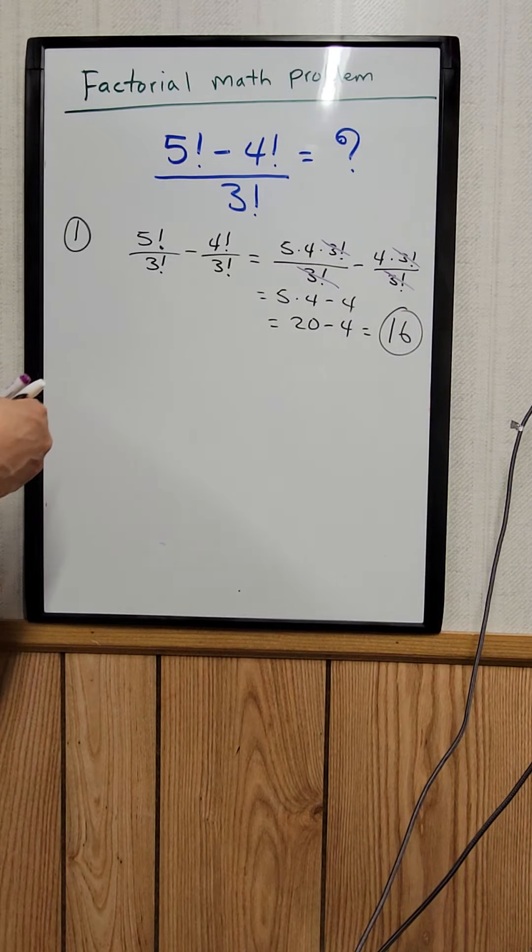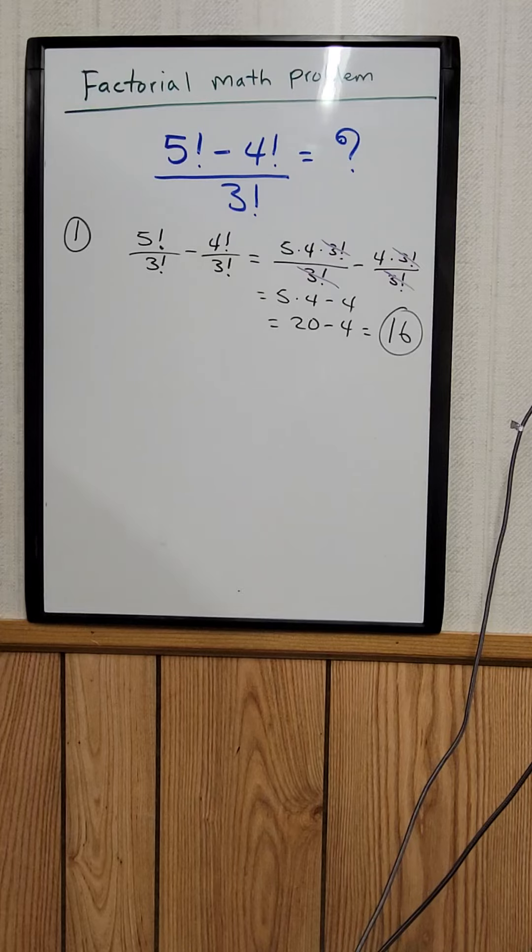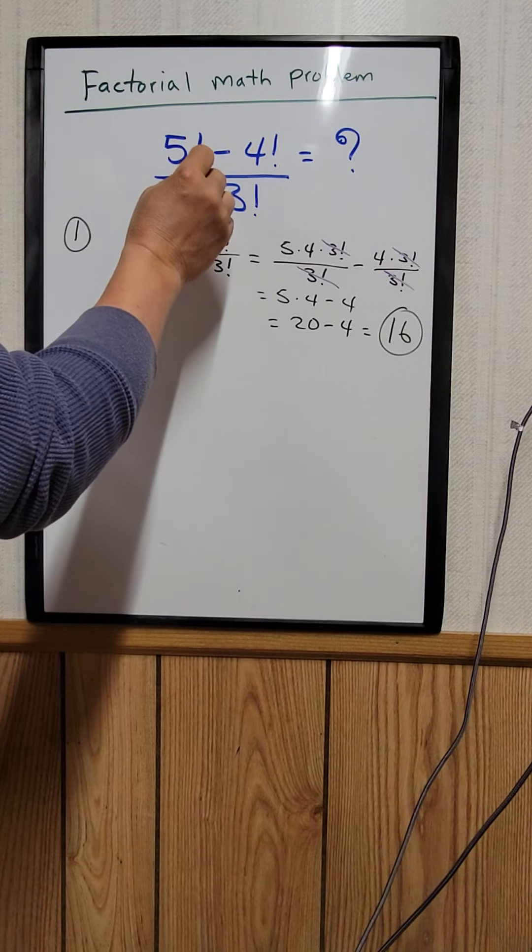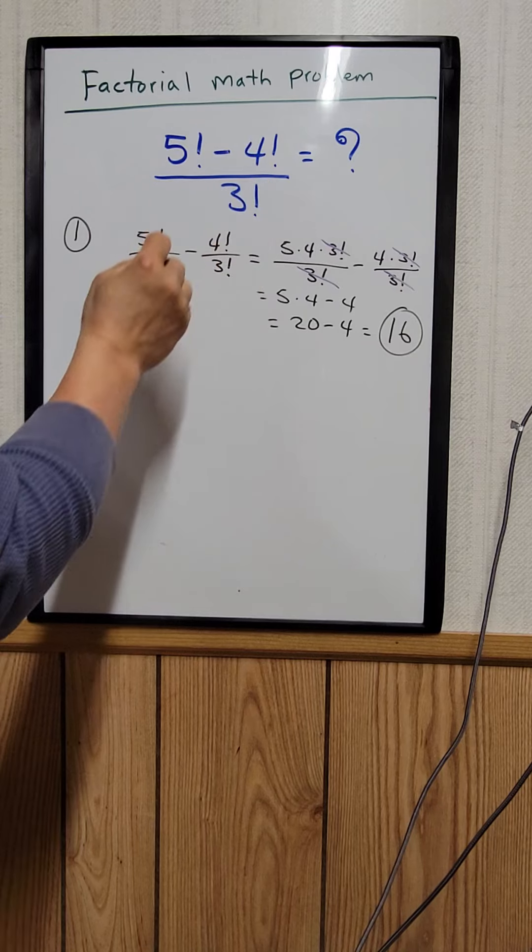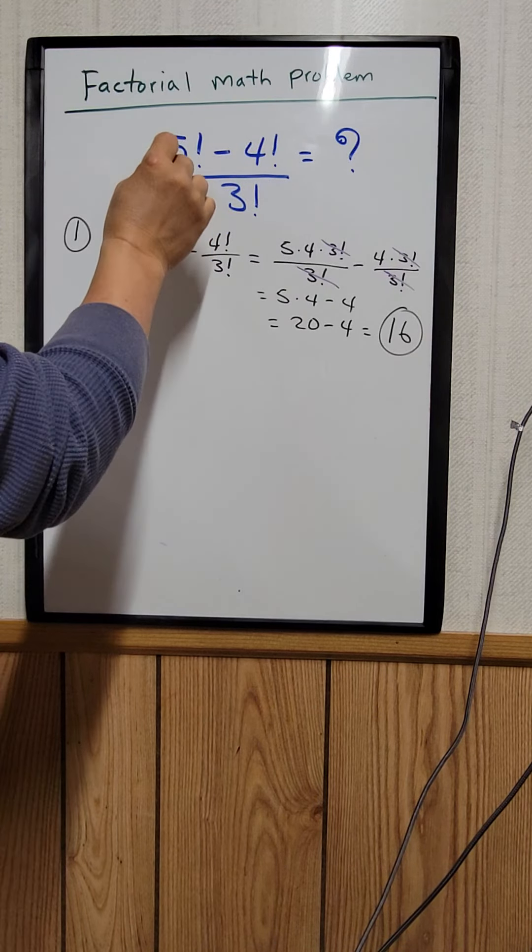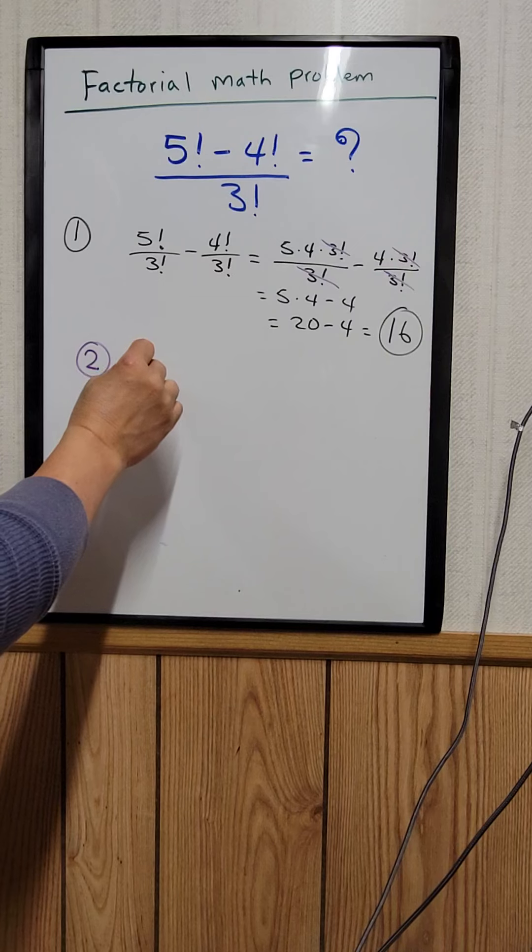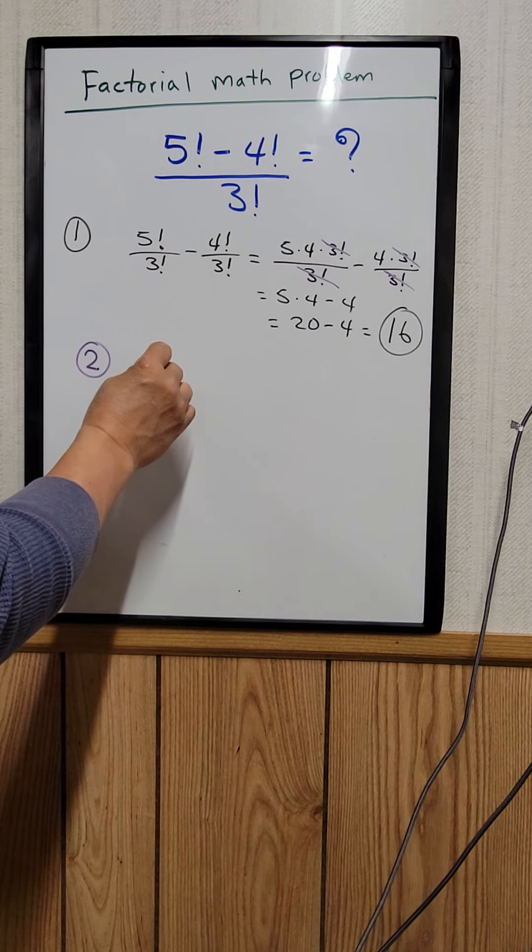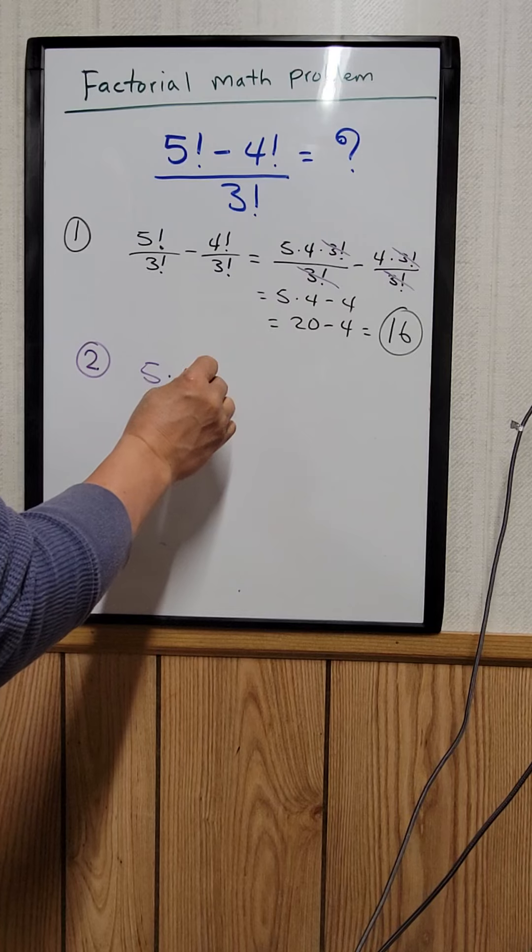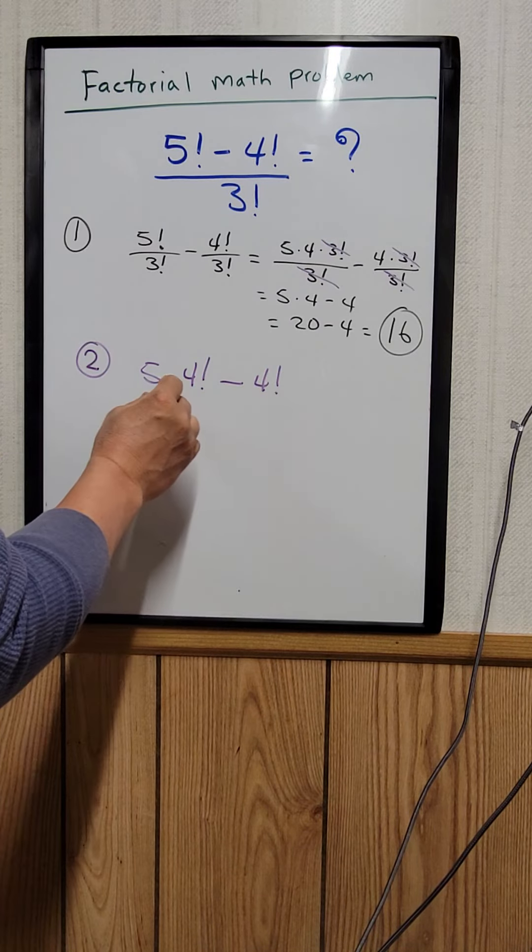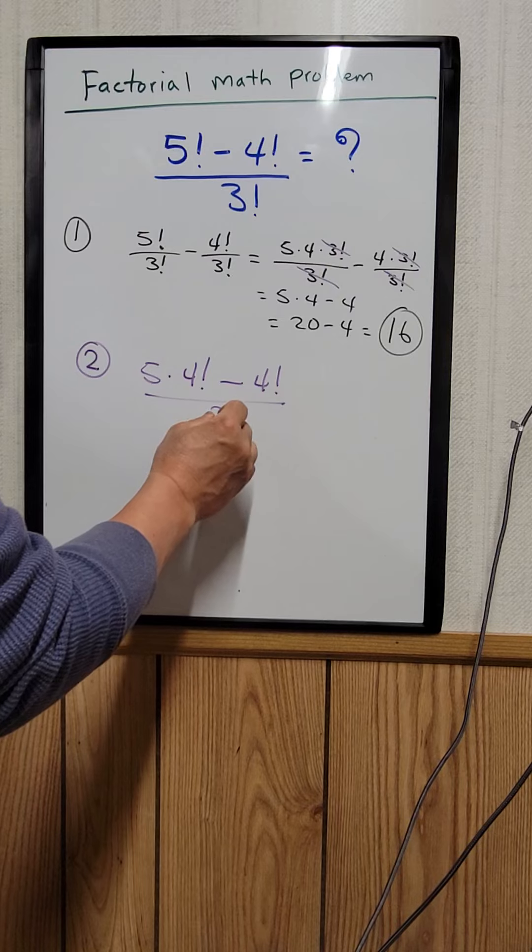Let me show you a second method. For this one, 5 factorial can be rewritten as 5 times 4 factorial, minus 4 factorial, all over 3 factorial.